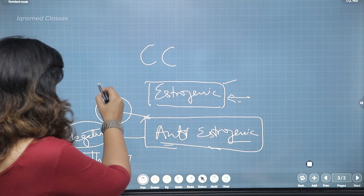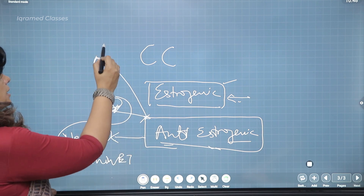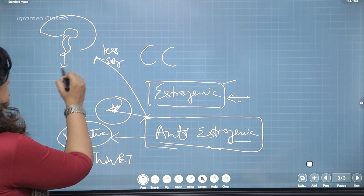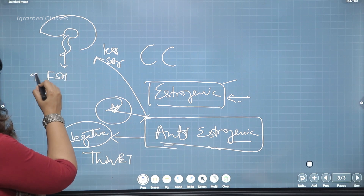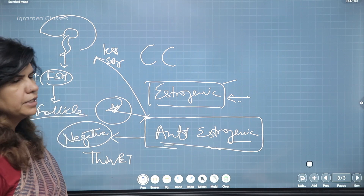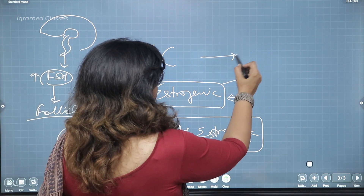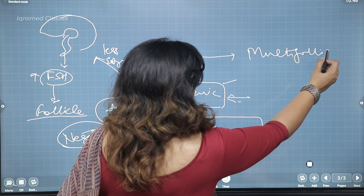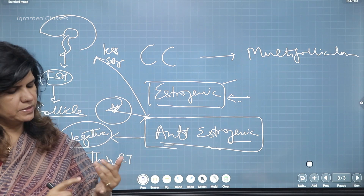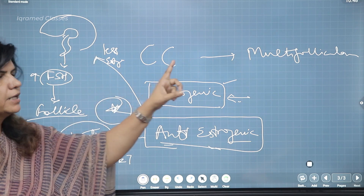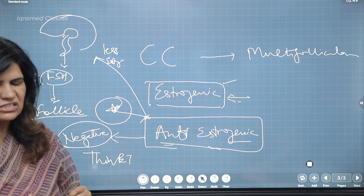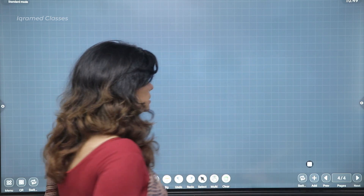That is why clomiphene citrate is called centrally acting — because the reduced estrogen effect goes to the brain and the pituitary secretes more FSH, which acts on the follicle. Follicle growth increases and the number also increases. That is why with clomiphene citrate we get multi-follicular growth, because the FSH level is increasing, which increases both the number and the growth pattern. So remember: centrally acting, multi-follicular growth, and anti-estrogenic effect — these three are the key properties of clomiphene citrate.